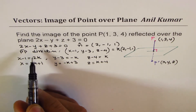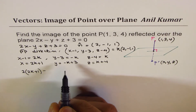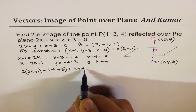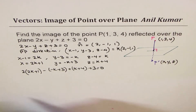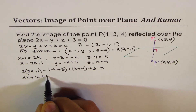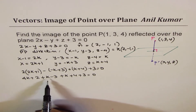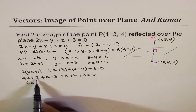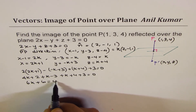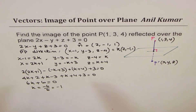Substituting into the plane equation: 2 times (2k+1) minus (minus k+3) plus (k+4) plus 3 equals 0. Expanding: 4k plus 2 plus k minus 3 plus k plus 4 plus 3 equals 0, giving 6k plus 6 equals 0, so k equals minus 6 over 6, which is minus 1.